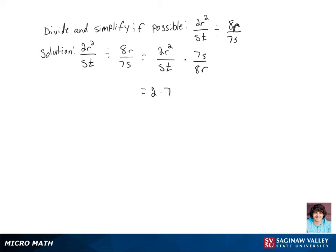So we're going to get 2 times 7 times r times r times s. And then on the denominator, let's rewrite 8 as 2 times 2 times 2 times r times s times t.